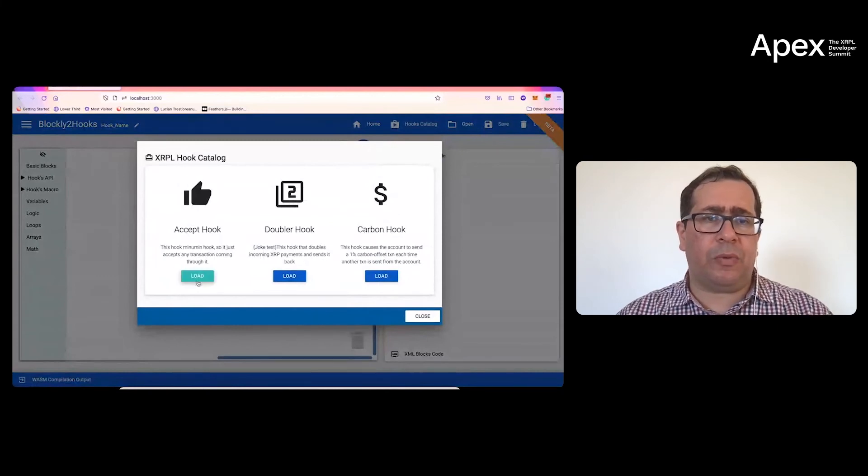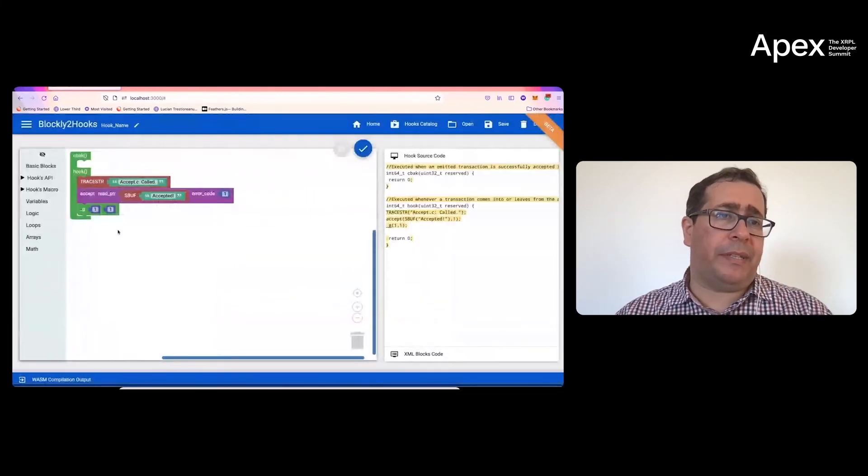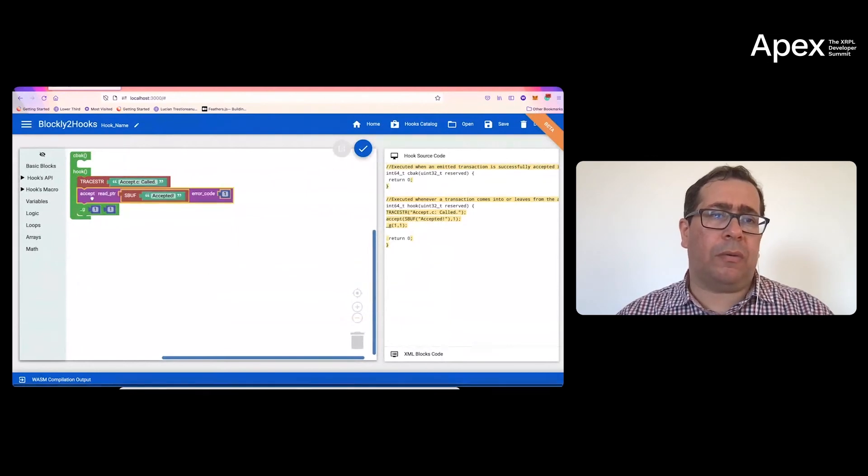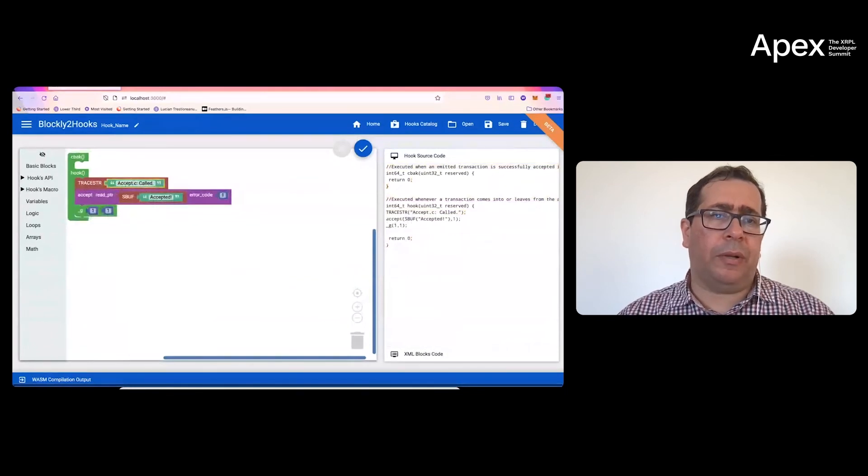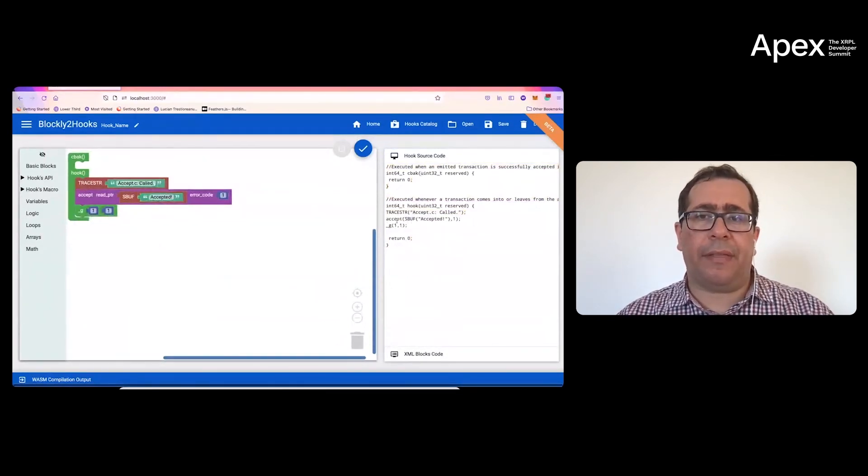For example, this is the simplest one called AcceptHook. This is the representation of the Hook in blocks. All these fields are editable, and it will automatically generate the code on the other side. Then we compile it.